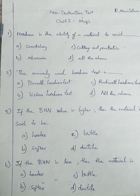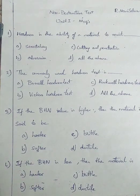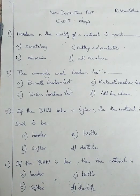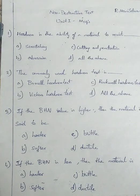Question number 1. Hardness is the ability of a material to resist. Option A: scratching. Option B: abrasion. Option C: cutting and penetration. Option D: all the above. Hardness is the ability of a material to resist scratching, abrasion, and cutting and penetration. So I am going with option number D, all the above.